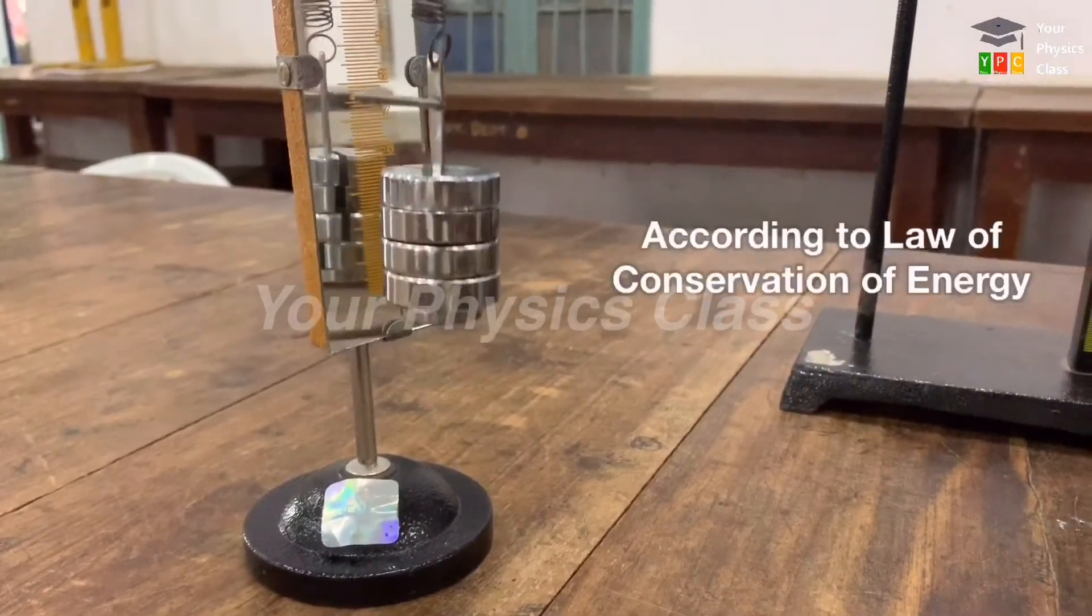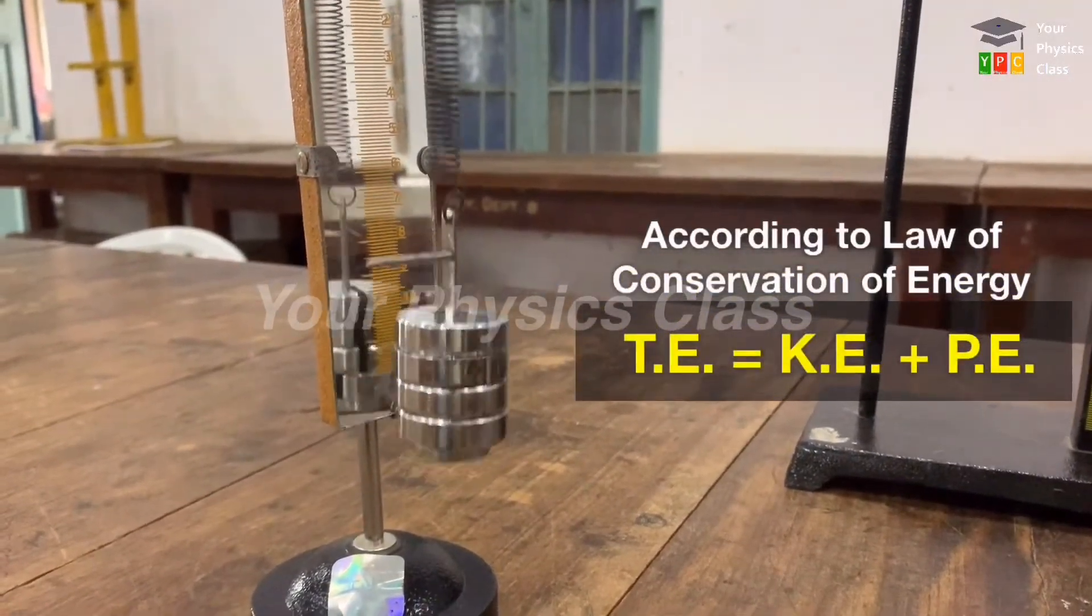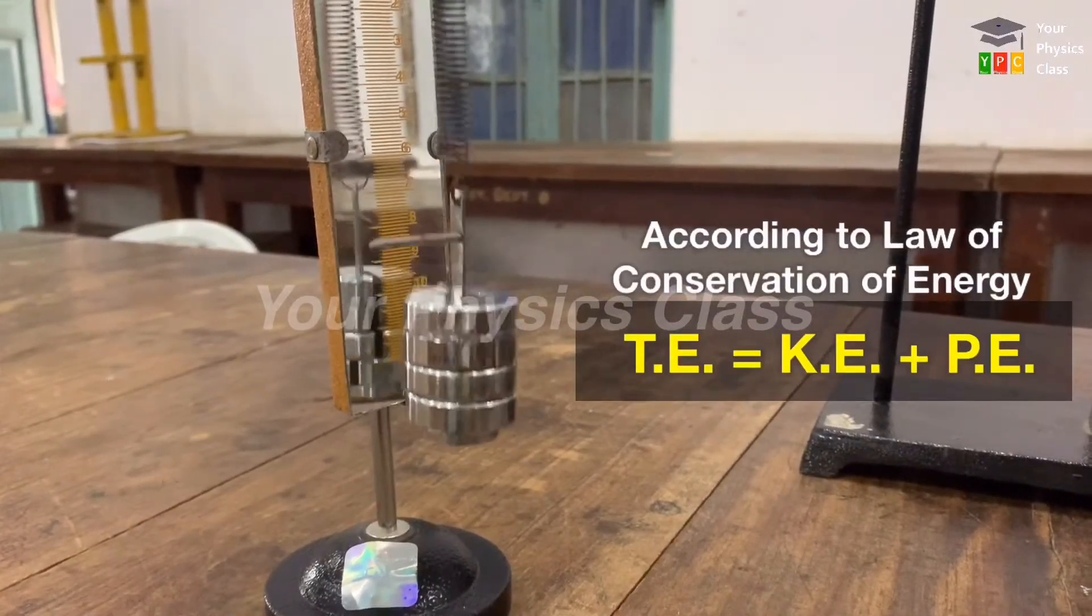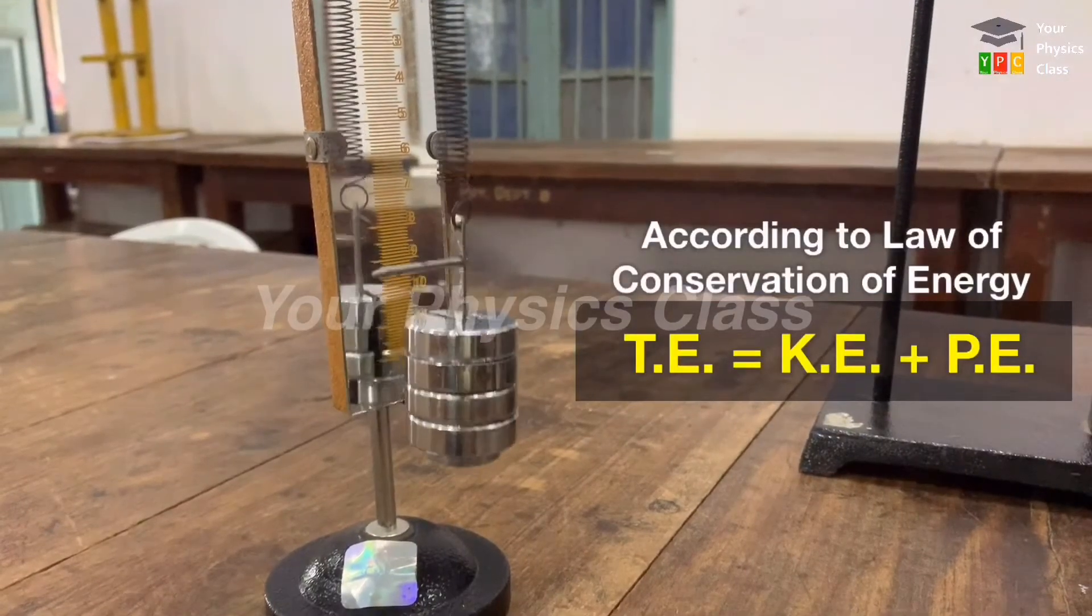So, according to the law of conservation of energy, the total energy of this particle must be the sum of kinetic energy and potential energy. So it will be total energy.